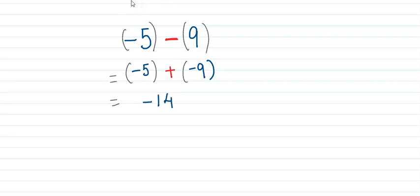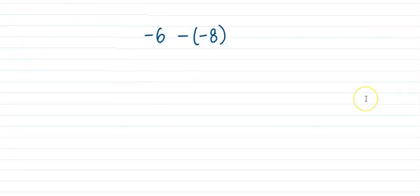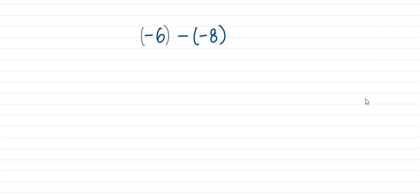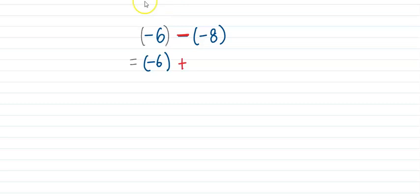I hope it is clear. Let's move on to the next subtraction. Here we can see that the first number is negative 6. The second number is already in the bracket — it is negative 8. So we are subtracting negative 8 from negative 6. We will change subtraction to addition and add the opposite. So the opposite of negative 8 is positive 8.